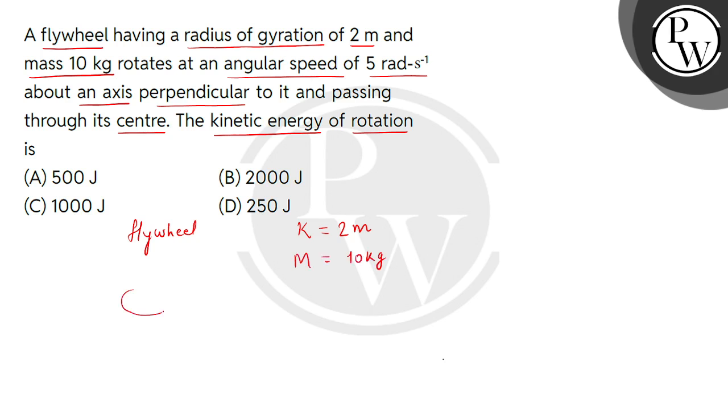And then we have to make diagram. So, this is the center of the axis. It is perpendicular to the flywheel. And this way, we have to denote its angular speed, which is given 5 radians per second.